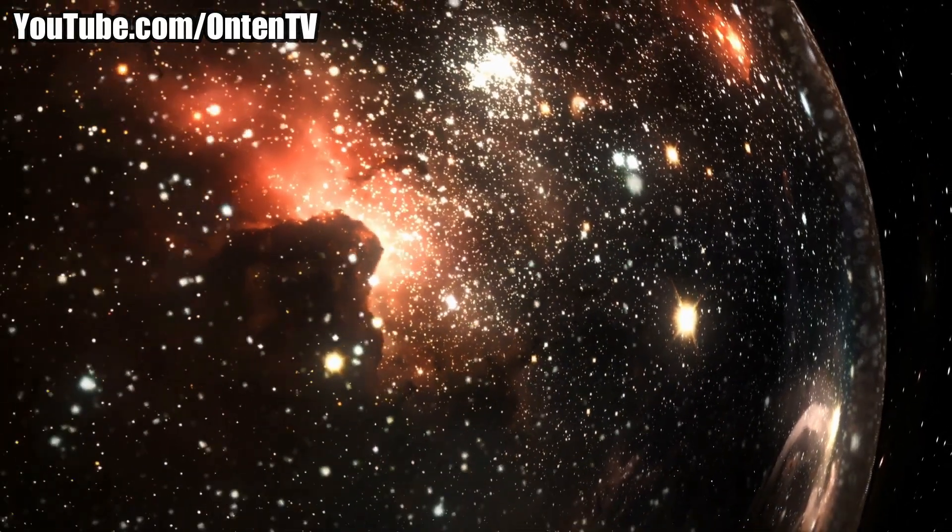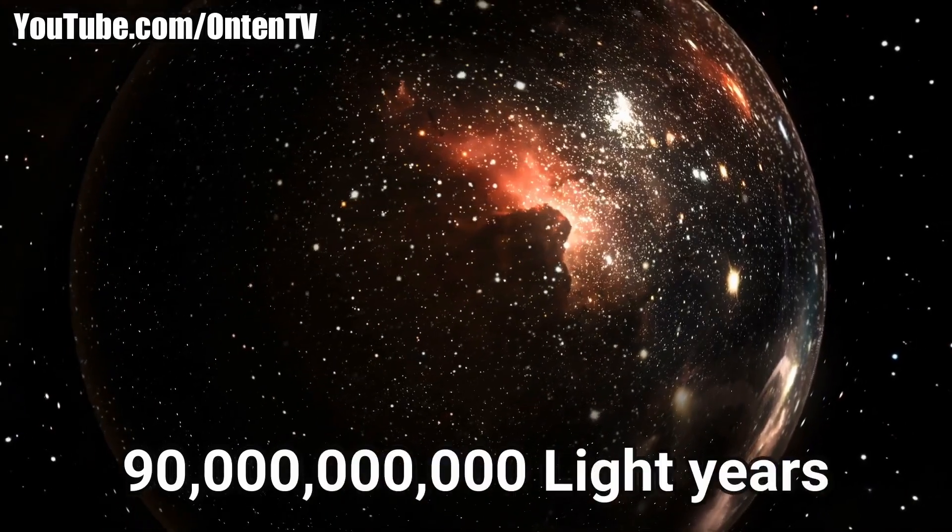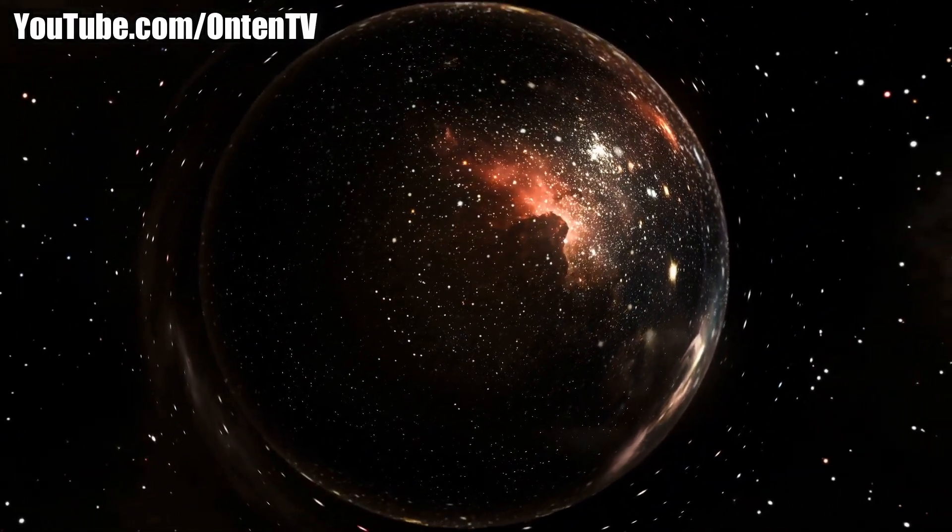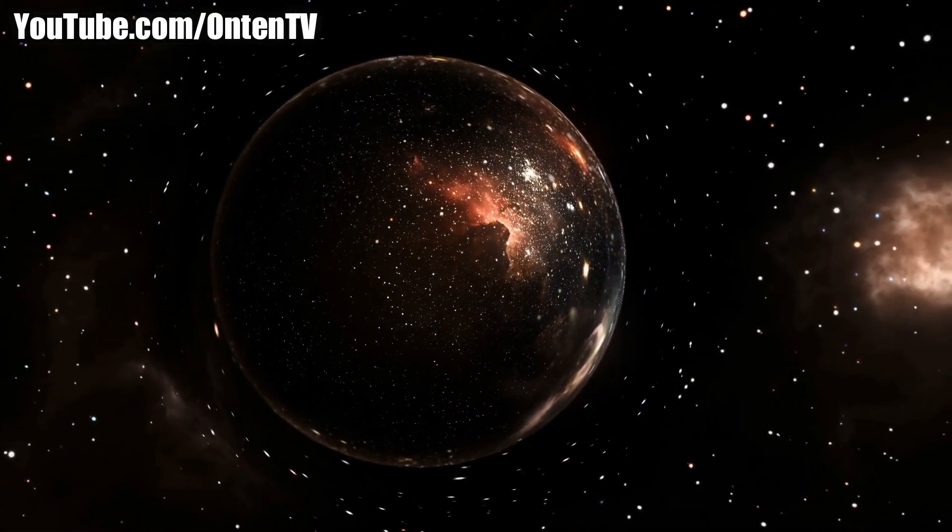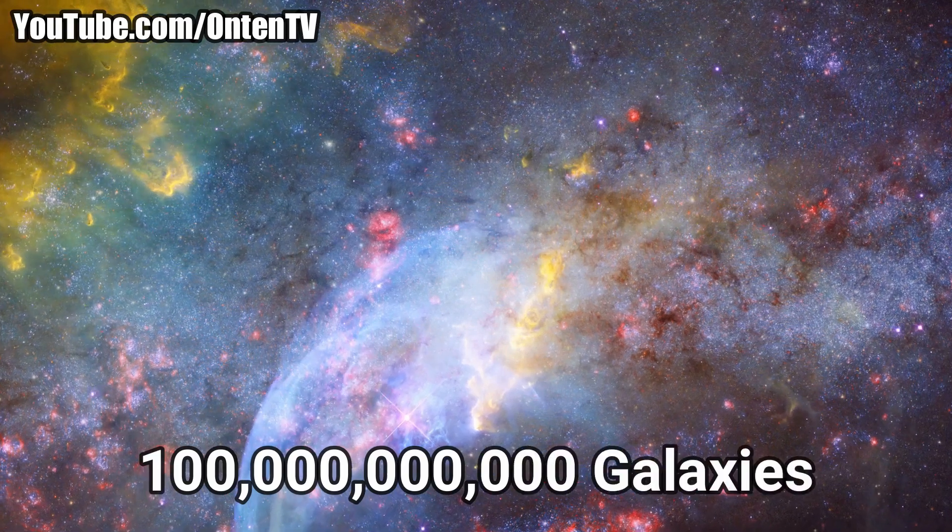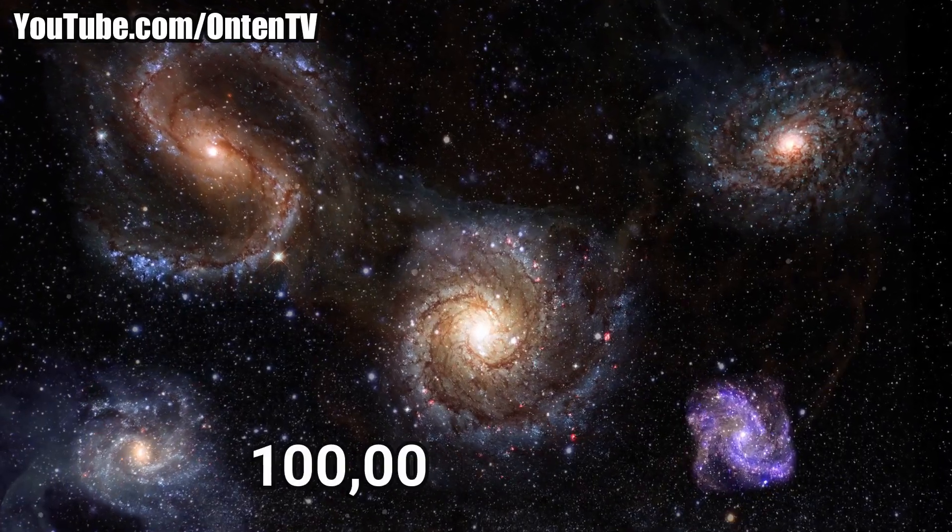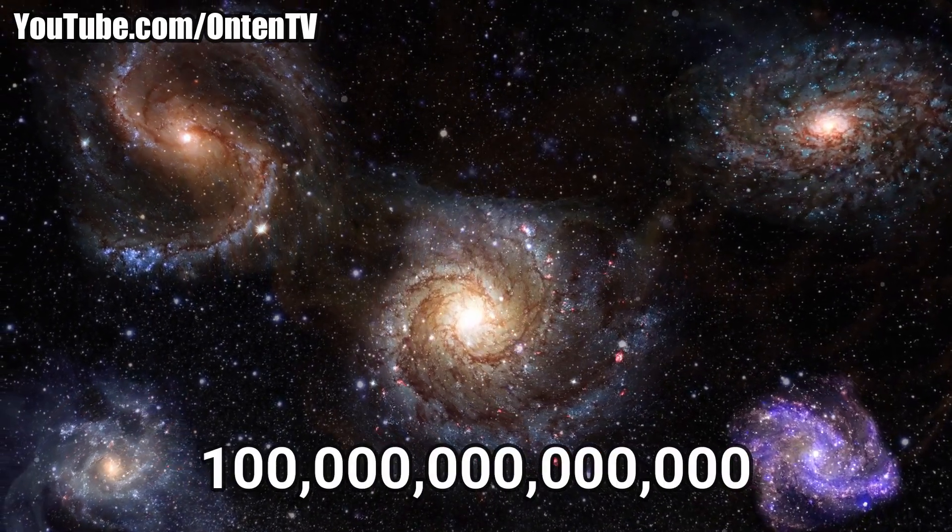The observable universe, meaning the universe we can see, is 90 billion light years in diameter. This is an insane number and it's just the diameter, not the volume. In this universe there are more than 100 billion galaxies.